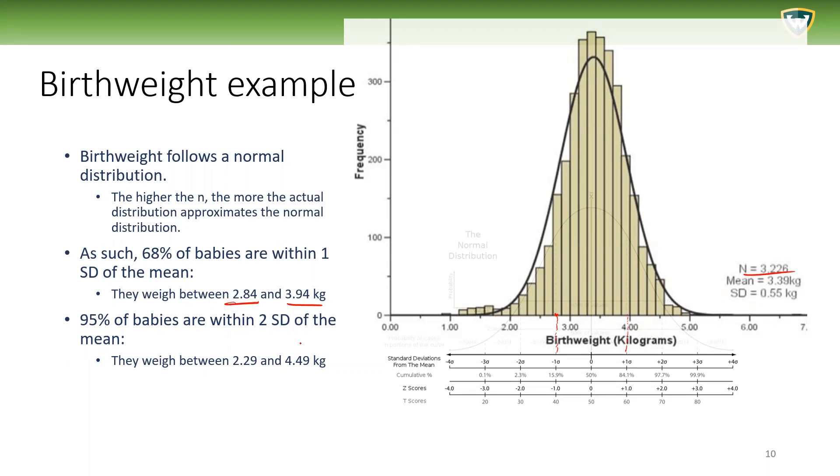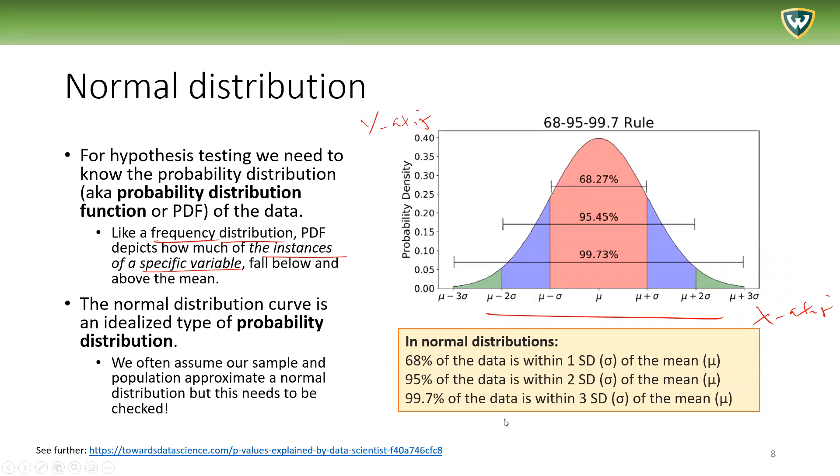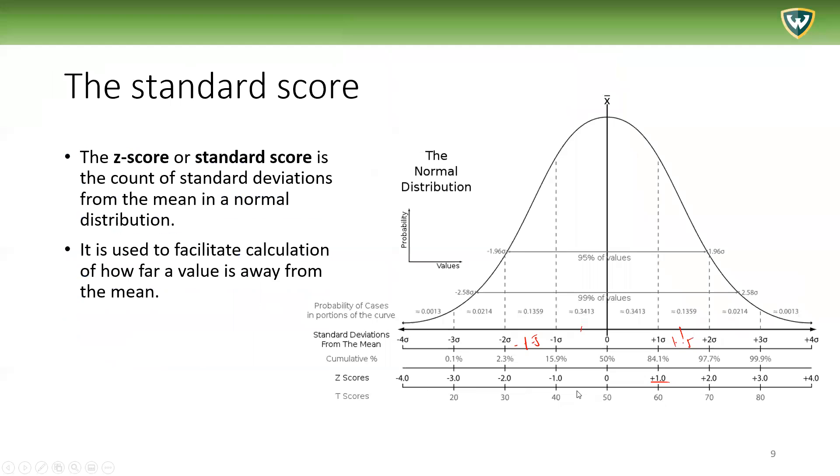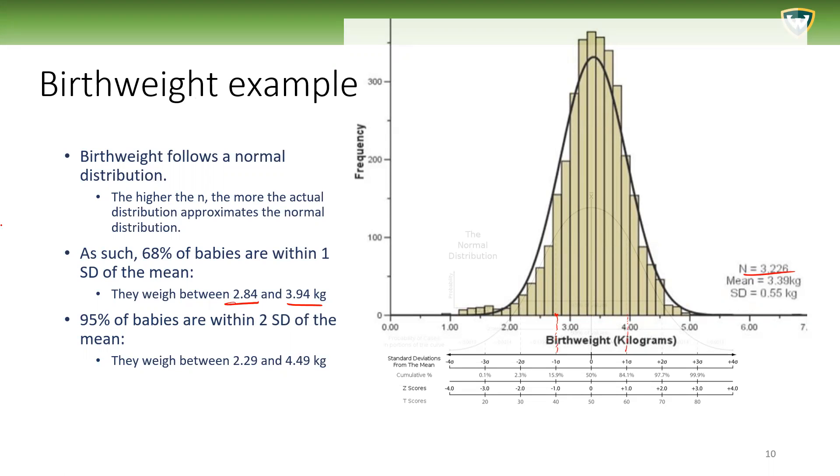Then we can follow along: 95% of babies are within two standard deviations of the mean. How do I know? Well it says right here—if we have a normal distribution, 95% of the data, the instances, the individuals are within two standard deviations of the mean.